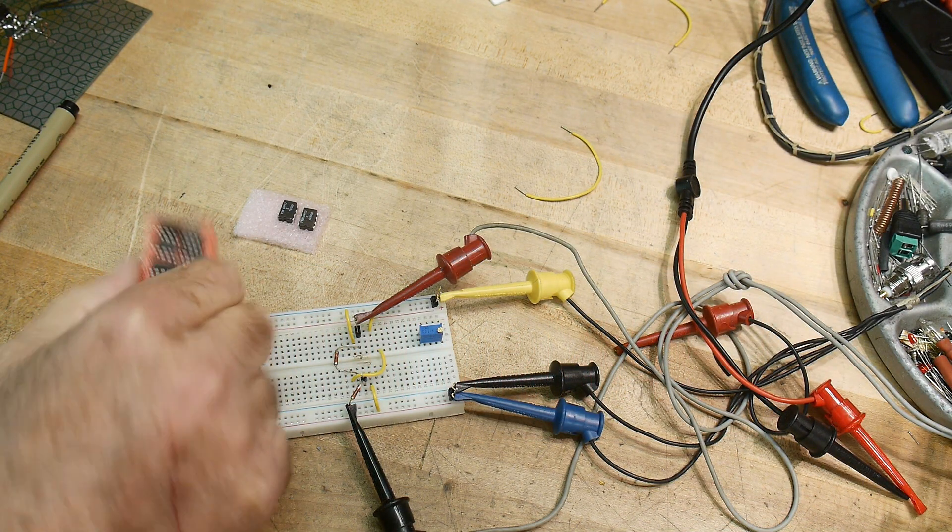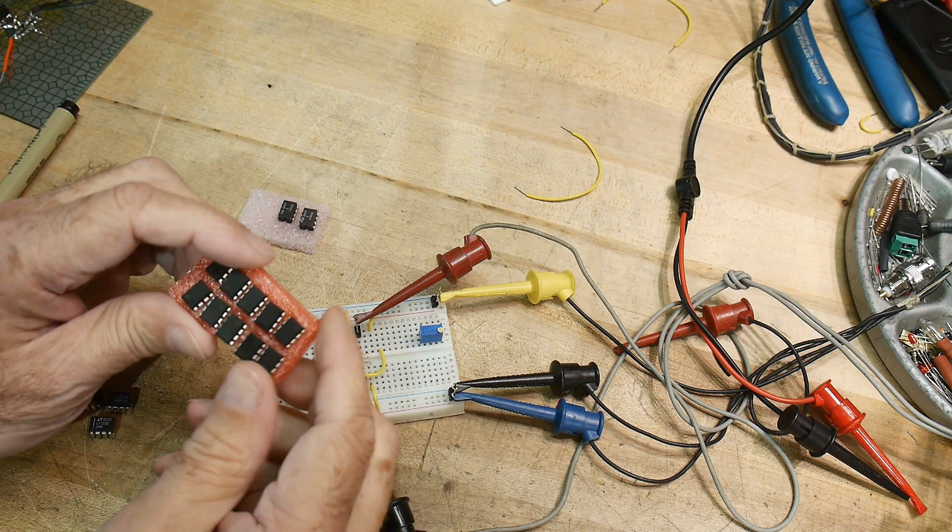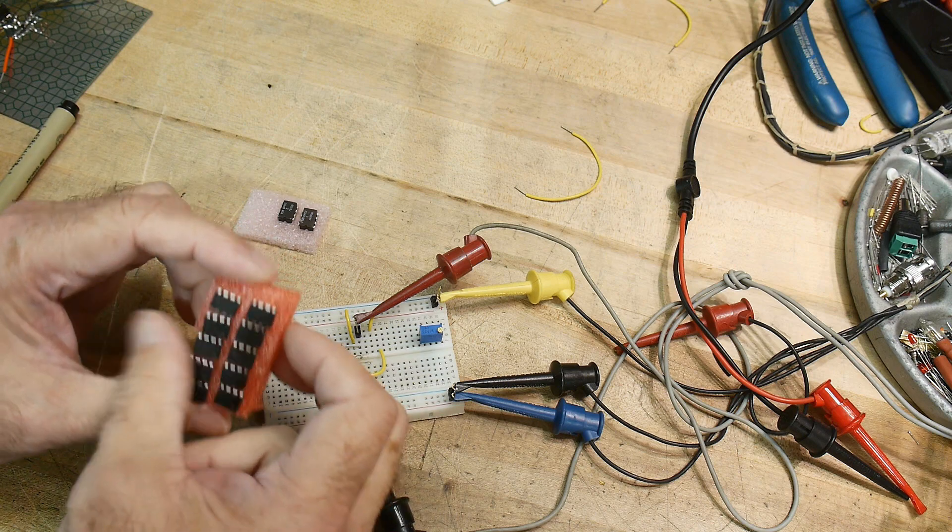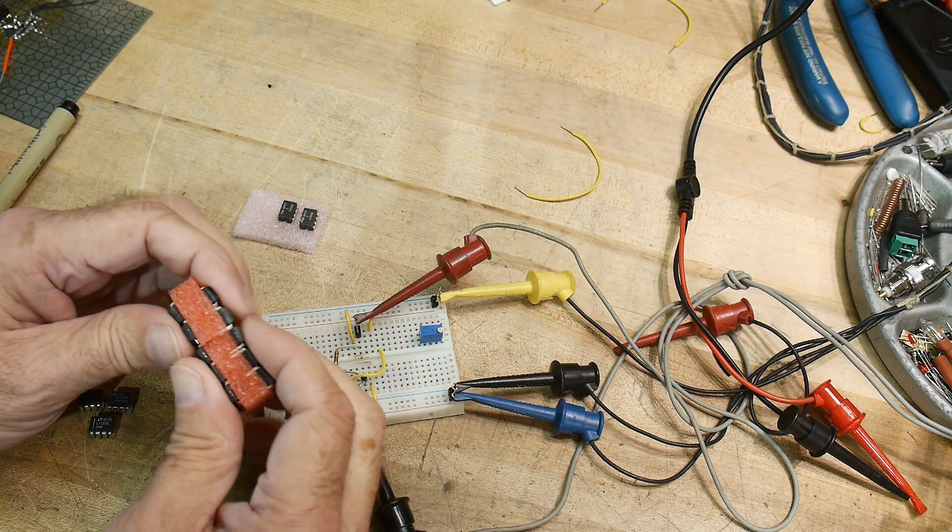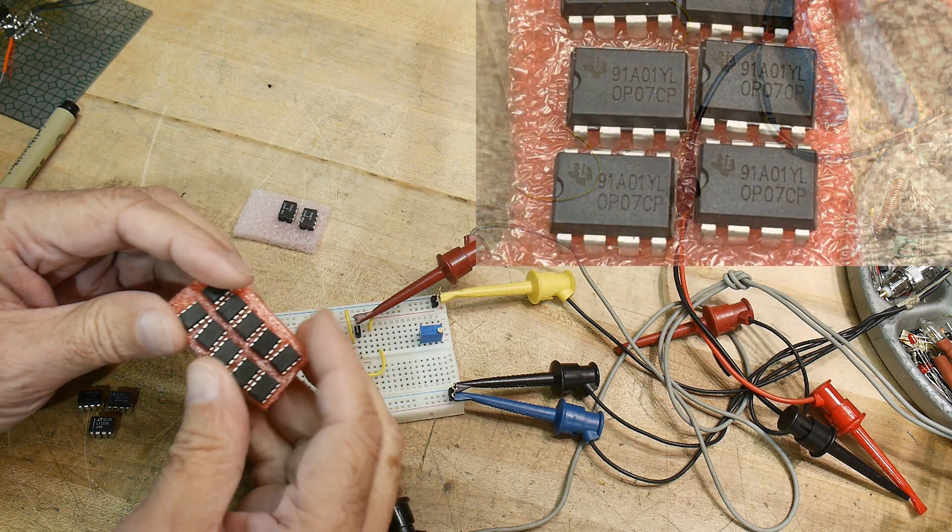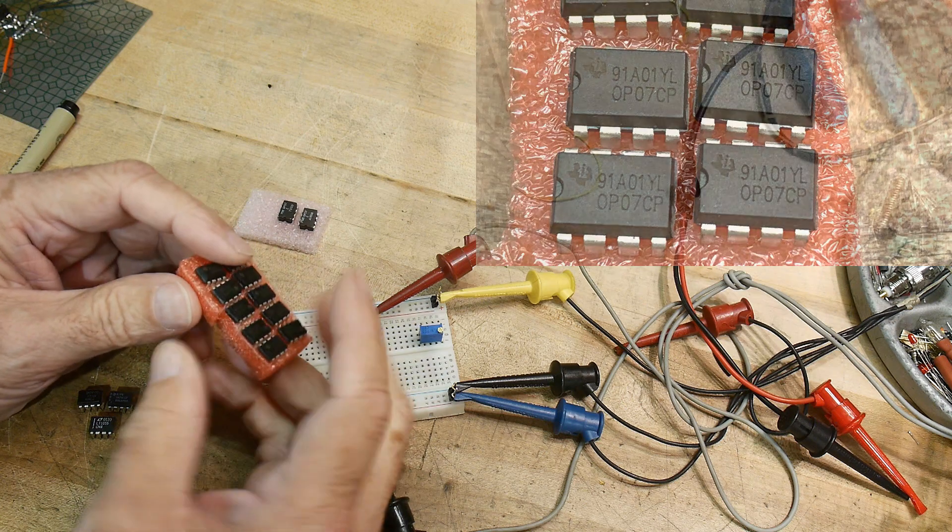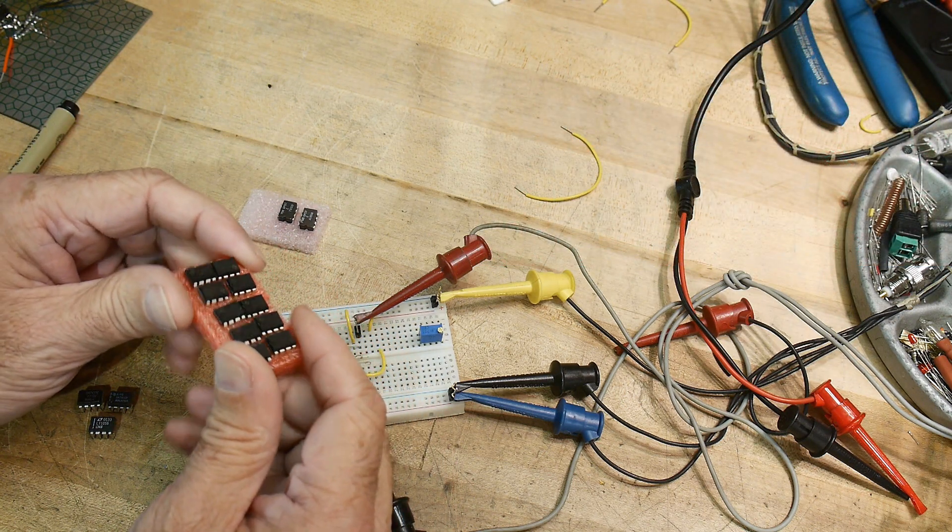So I did a video earlier on these 20 op-amps that I bought on eBay. These are Texas Instruments OP07s, super high precision op-amps, and I got 20 of them for $1.89. Of course they ended up being fake. So I got my money back and got to keep the parts, so we get to play with them.